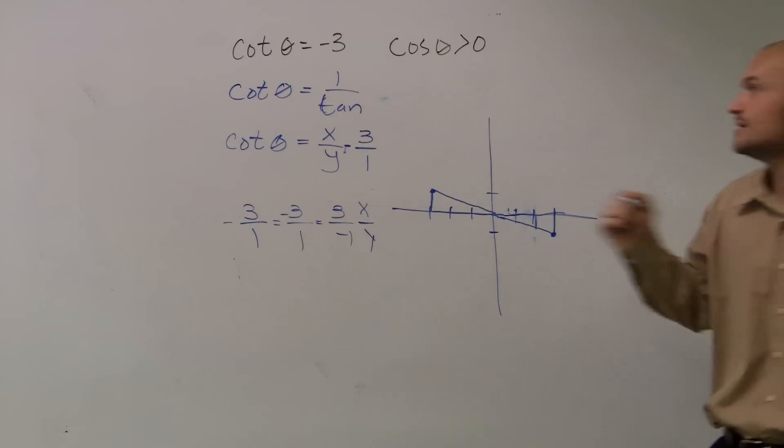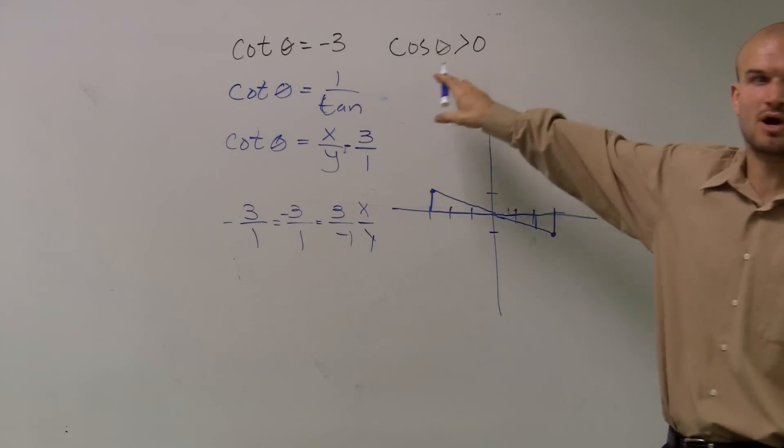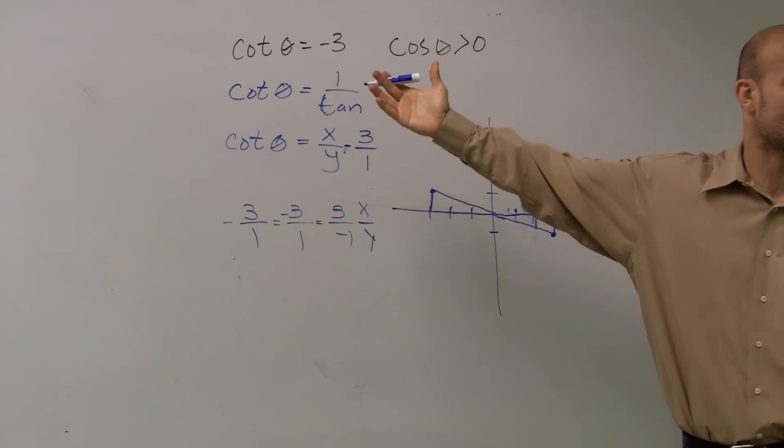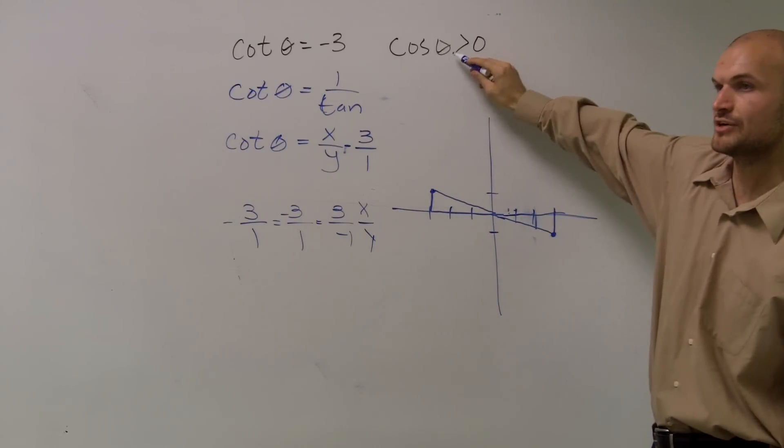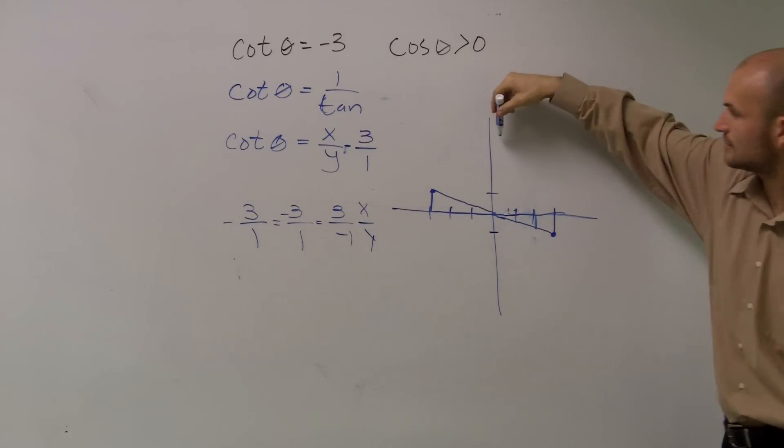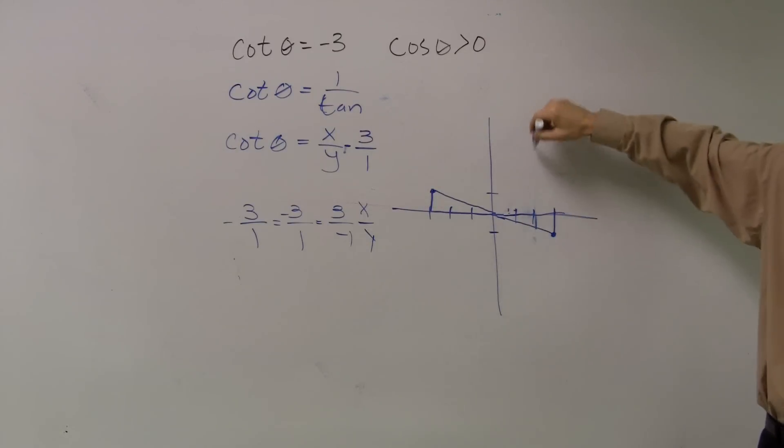Well, remember cosine relates to our x values, right? x over our radius. And our radius is always going to be positive. So when is my x values greater than 0? Well, that's going to be in the first and the fourth quadrant.